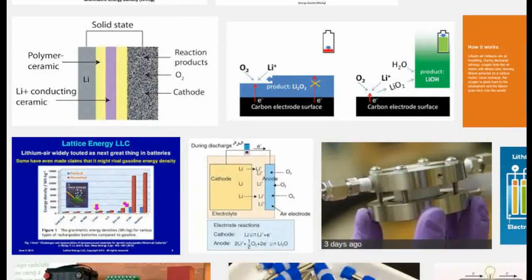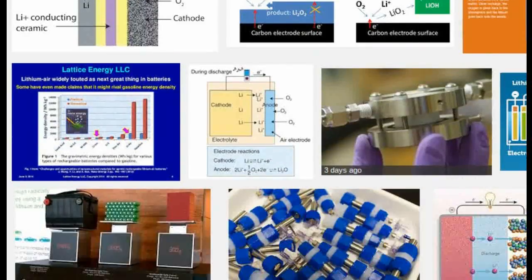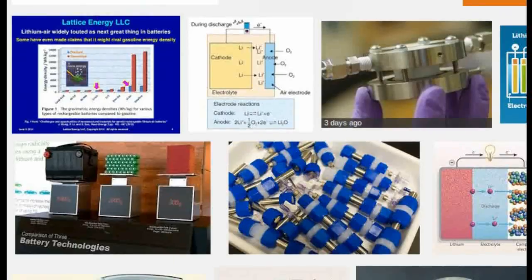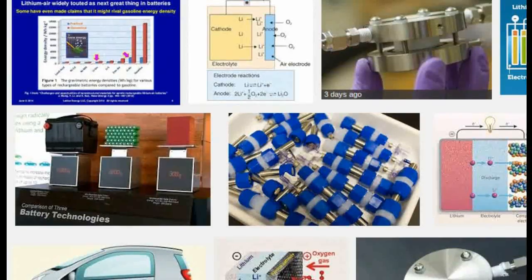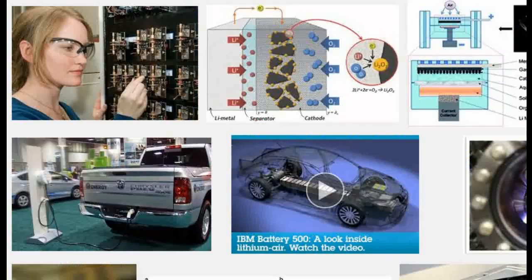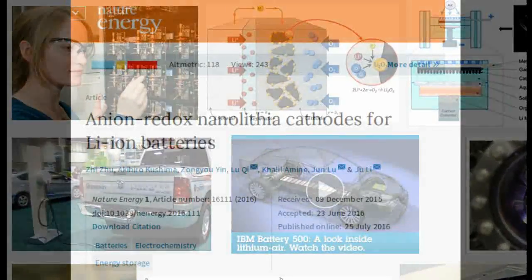But a new variation of the battery chemistry, which could be used in conventional, fully sealed batteries, promises similar theoretical performance as lithium-air batteries while overcoming all of these drawbacks. The new battery concept, called a nanolithia cathode battery, is described in the journal Nature Energy.